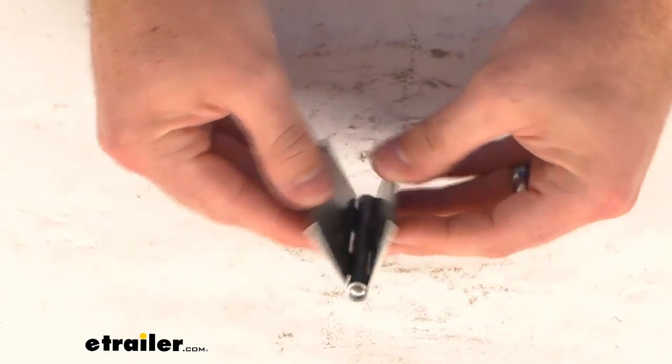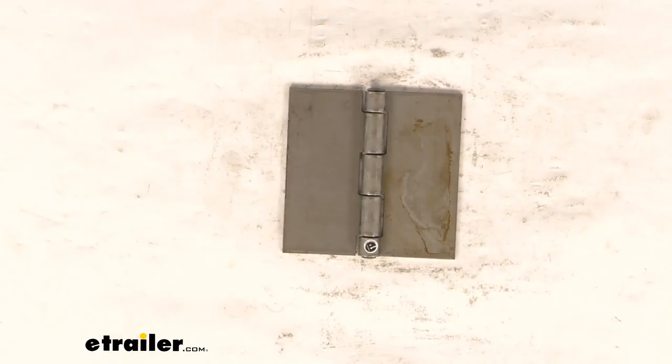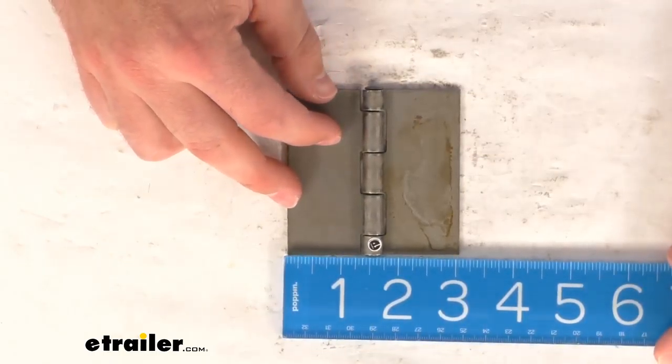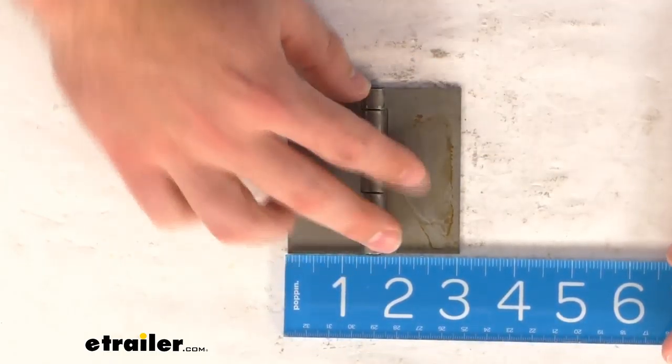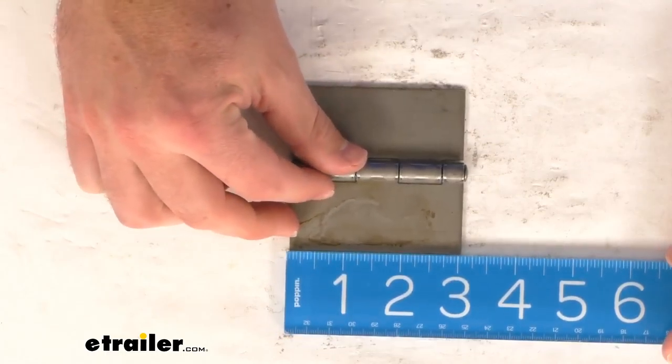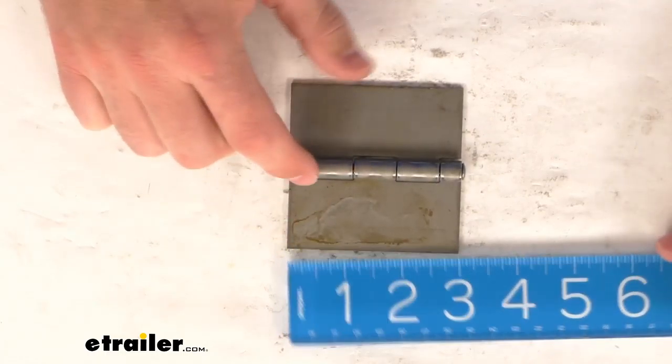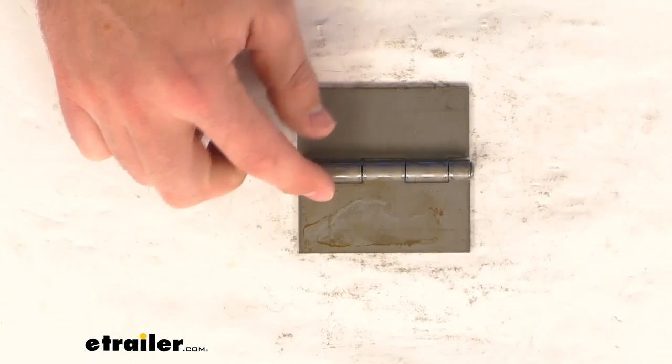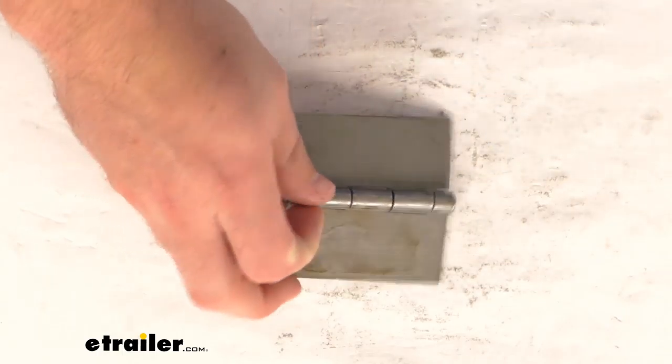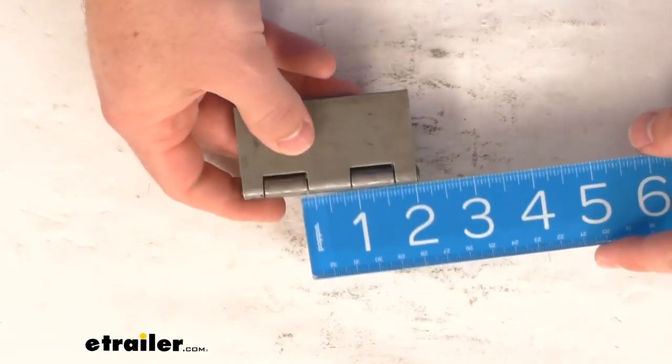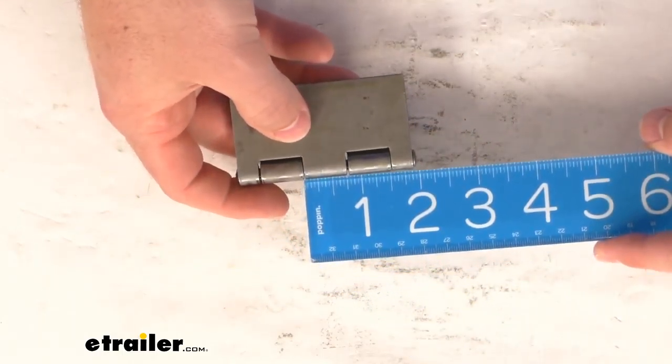Our measurements: this is right at three inches wide by three inches tall. Our pin diameter is three sixteenths of an inch, and our knuckle length you can see there, right about three quarters of an inch.